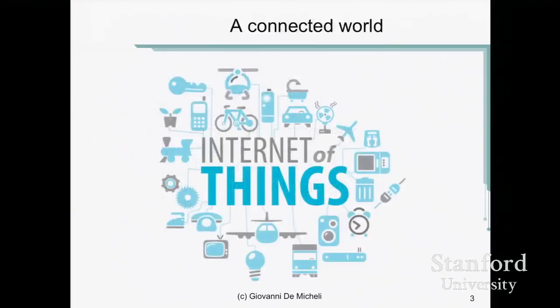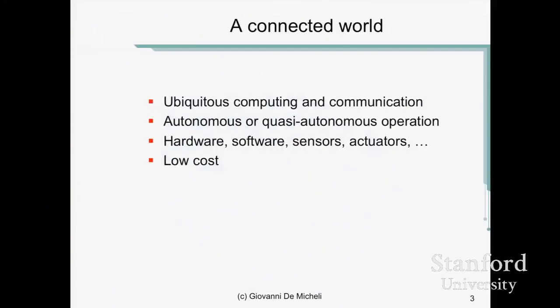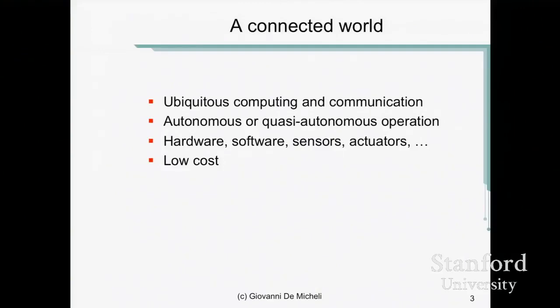Just to give the big picture: we live in a connected world. We talk about the Internet of Things or the Internet of Everything — ubiquitous computing and communication systems that have to be autonomous in terms of energy, intelligence, and autonomous driving. You mainly have four types of components: hardware, software, sensors, and actuators. Many years ago when I was teaching the VLSI class, we were focusing mainly on electronics. Then we went into hardware-software co-design, and then software became dominant. But there is an entire dimension relating to sensors, actuators, and how we interface computing to the rest of the world. And finally, what we do has to be reasonably low cost because there are consumers at the end of the line.